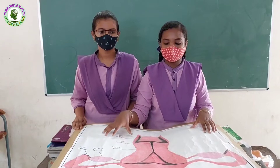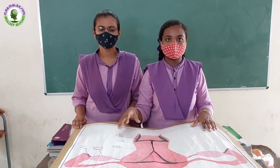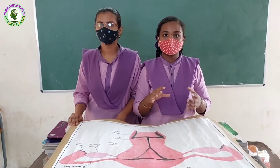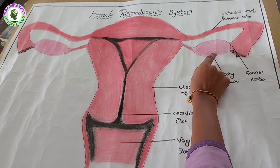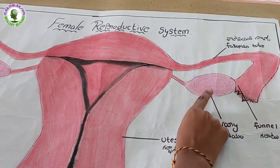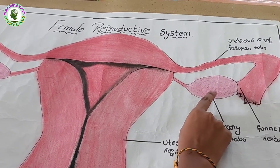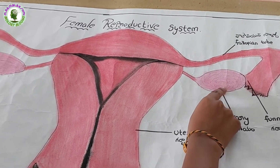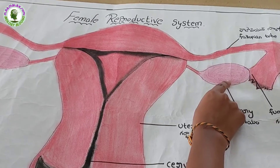The cycle of changes in the female reproductive system is called the menstrual cycle. It usually lasts from 28 to 30 days. The ovum develops in tiny cellular structures called Graafian follicles in the ovary.